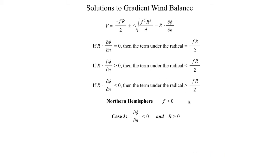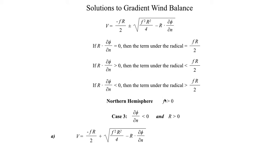Let's take a look at another combination: R positive and dφ/dn negative. The product R times dφ/dn is negative, so the term under the radical is larger than F times R over 2. Since R is positive and we're in the northern hemisphere, the leading term is negative. So we get a small negative number plus a big positive number, which does give us a positive number — a physically possible solution to the gradient wind balance.